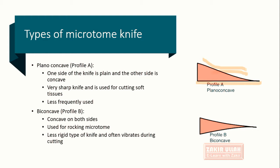Profile B is the biconcave type of knife. This knife is concave from both sides and is used mainly for the rocking microtome. However, this type of knife is not very rigid and vibrates during use, which can cause problems when cutting sections.